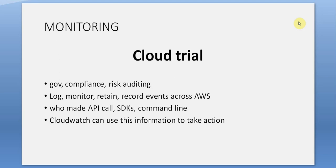CloudTrail: governance, compliance, risk auditing, logging, monitoring, and retaining records of events across AWS. Find out who made API calls, SDKs, and command-line actions. CloudWatch can use this information to take action.